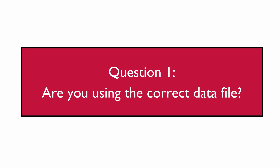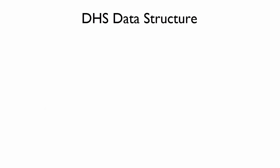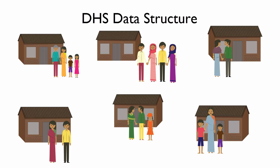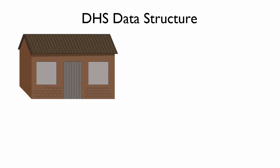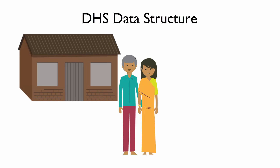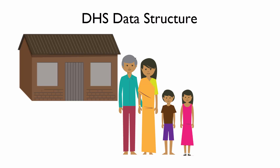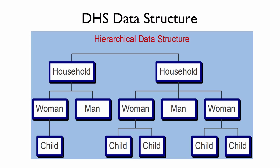The first question you should ask yourself is: am I using the correct data file? DHS collects data about households and the household members who reside there, and within these households, DHS interviews adult women and men. When interviewing the women, we also ask about each of her children. All of these data naturally form a hierarchy, but handling hierarchical data is complicated, so we make different files for the different units of analysis.